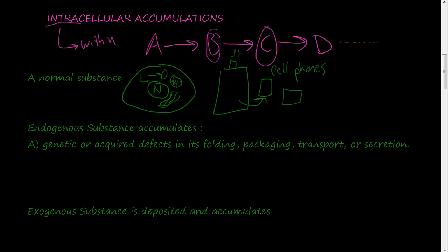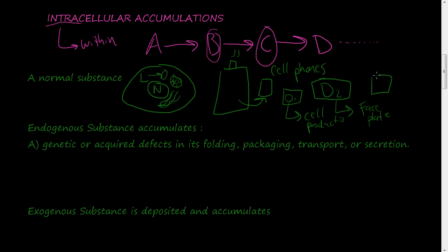Within this manufacturing company there are departments. Department one puts the cell phones together, department two attaches face plates and different designs, and department three goes through quality control. Each department has to do its own thing and is dependent on the previous department. It's the same thing in the cell - everything starts in the nucleus.